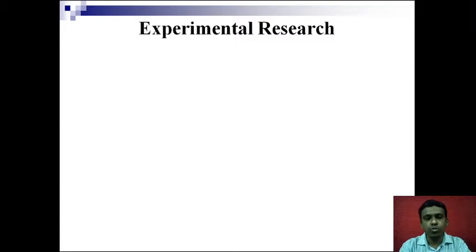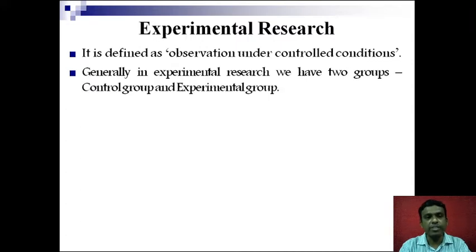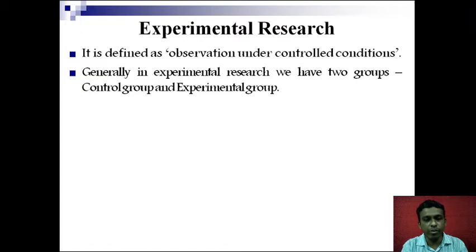To simply put it, experimental research can be defined as observation collected under controlled conditions. Generally in experimental research there are two groups: the first group is the control group and the other one is the experimental group.